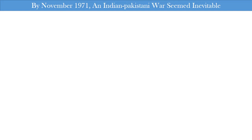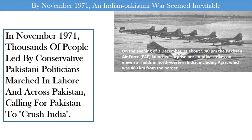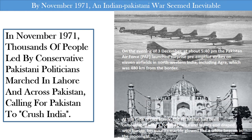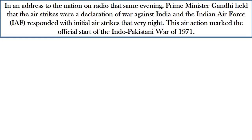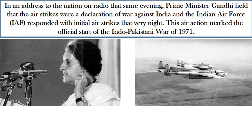By November 1971, an India-Pakistan war seemed inevitable. Thousands of people led by conservative Pakistani politicians marched in Lahore and across Pakistan calling for Pakistan to crush India. On the evening of 3rd December at about 5:40 PM, the Pakistani Air Force launched surprise pre-emptive strikes on 11 airfields in northwestern India, including Agra, which was 480 km from the border. At the time of the attack, the Taj Mahal had been camouflaged with twigs, leaves, and barrel wrap because its white marble gleamed like a beacon in the moonlight. In an address to the nation that same evening, Prime Minister Indira Gandhi declared the airstrikes a declaration of war against India, and the Indian Air Force responded with initial airstrikes that very night. This air action marked the official start of the Indo-Pakistan War of 1971.